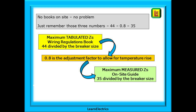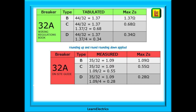So if you arrive on site with no books, no problem — use your newly learnt mental skills to find the answer. Just remember those three useful numbers: 44, 0.8, and 35. The maximum tabulated ZS is from the wiring regs book, and we can calculate this if we divide 44 by the breaker size. 0.8 is the adjustment factor to allow for temperature rises in the copper cables. The maximum measured ZS as found in the onsite guide can be calculated easily when we divide 35 by the breaker size. This slide summarises all that we have talked about for a 32 amp breaker — type B, type C, and type D.